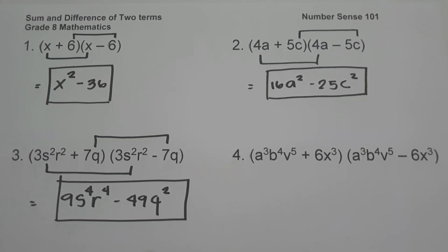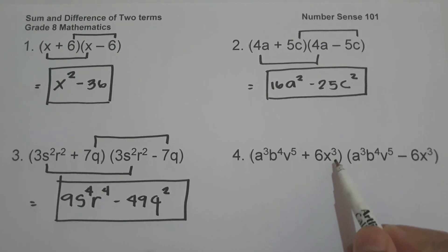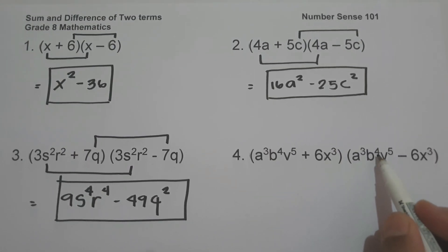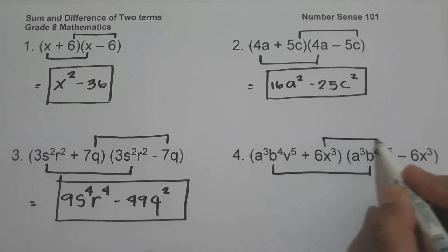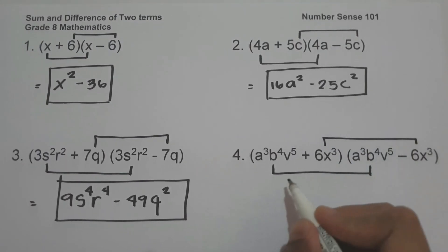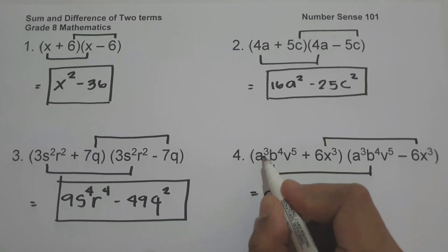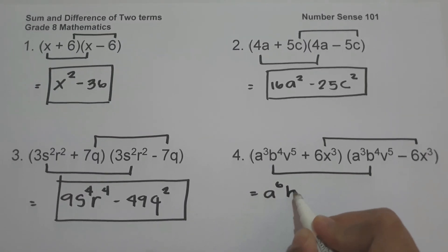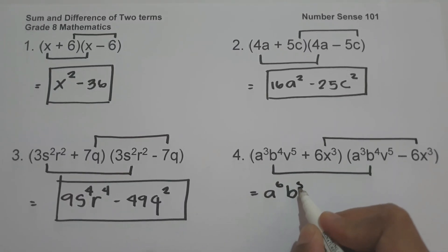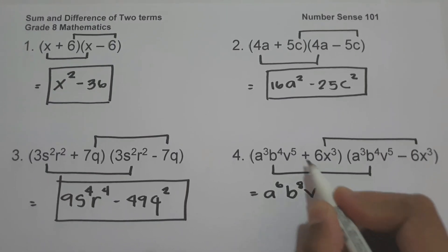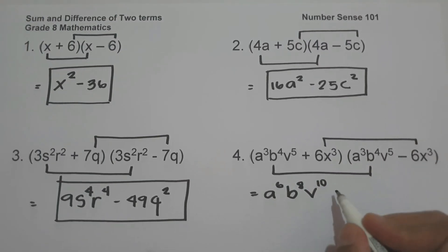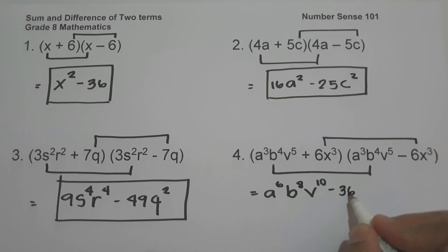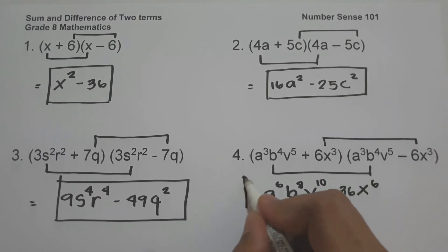On example number four we have quantity a cubed b raised to the fourth v raised to the fifth plus six x cubed, times the quantity a cubed b raised to the fourth v raised to the fifth minus six x cubed. Multiply first term to first term: add exponents — a to the sixth, b to the eighth, v to the tenth. Then six x cubed multiplied by negative six x cubed is negative thirty-six x to the sixth. That is our answer.